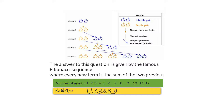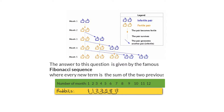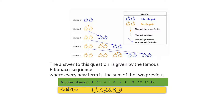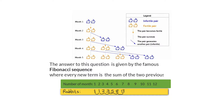Eight plus thirteen gives you twenty-one. Twenty-one plus thirteen gives you thirty-four. Twenty-one plus thirty-four gives you fifty-five. Fifty-five plus thirty-four gives you eighty-nine. Eighty-nine plus fifty-five gives you 144, which is the answer.